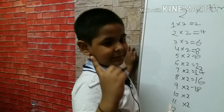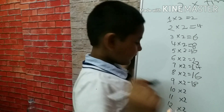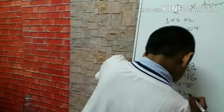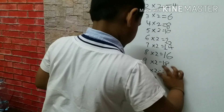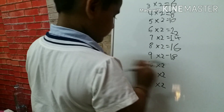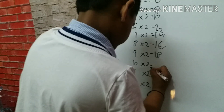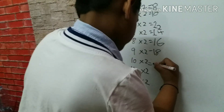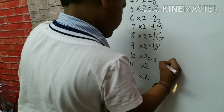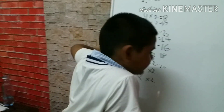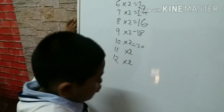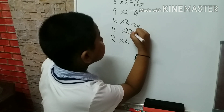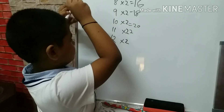Ten. Ten. Ten. Oh, you're such a dreamer. And eleven, eleven times two — twenty-two. No, no, no.